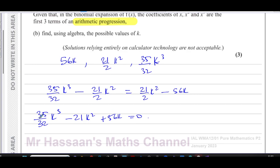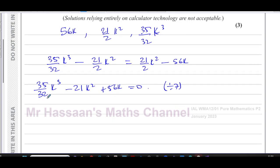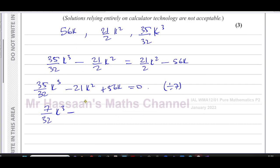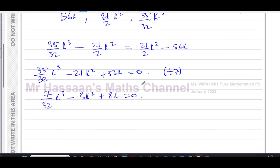Now I can see that in each of these terms, there's a common factor of 7. So if I first of all start by dividing by 7 to make life a bit easier. I have 35 divided by 7, which is 5, excuse me, that should be a 5 here. So that's 5 over 32k cubed, minus 21 over 7, which is 3, that's minus 3k squared. And 56k divided by 7, which is plus 8k, is equal to zero.